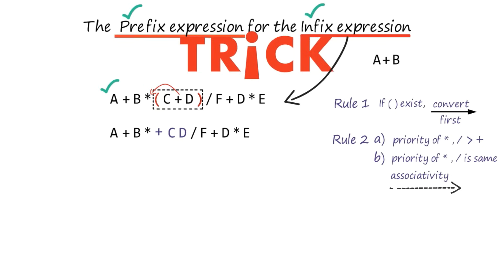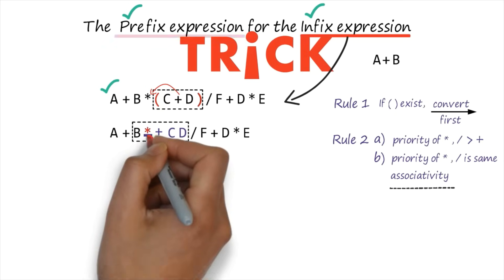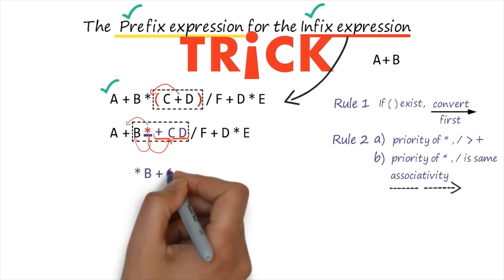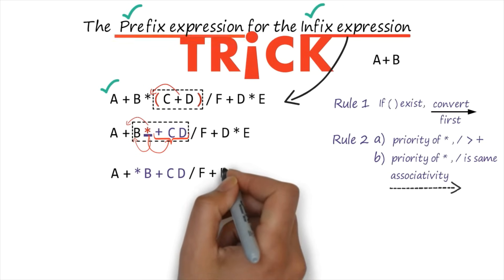Reading from left to right, which operator comes first — star or division? According to the expression, star comes first. So we focus on that region and operate on that star. This is the left operand and this is the right operand; as a whole, plus cd is the right operand. We convert it as a whole infix expression into postfix, dragging the operator after the operands. So it becomes: b plus cd star, and the rest — a plus slash f plus d star e — remains as it is.